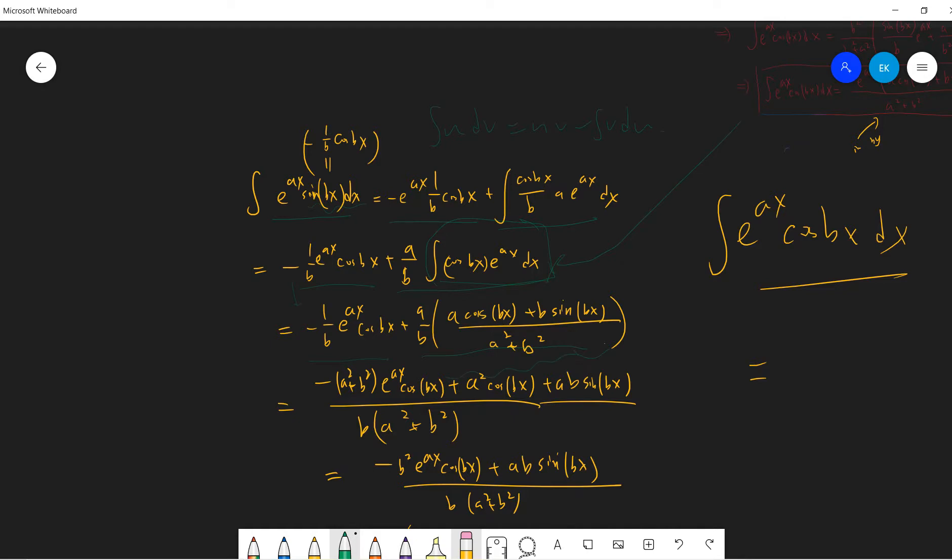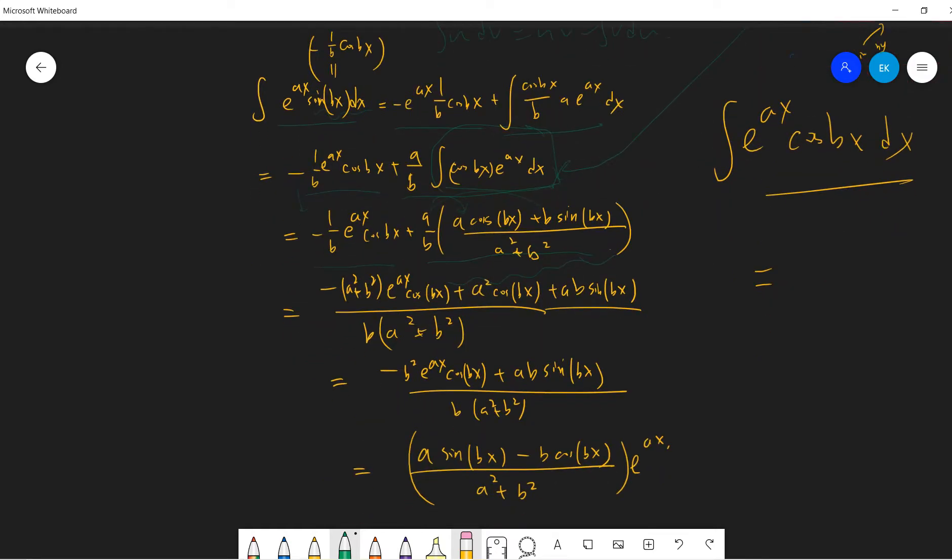And just take a denominator, so you get the a minus b squared plus b squared plus bx plus a squared, right? You pull a squared plus ab sine bx. So the a squared cancel, then you get negative b squared exponential ax cosine bx plus ab sine bx divided by b. So cancel b, delete b. So you get a sine bx minus b cosine bx exponential ax. Okay, so nice way, this is our answer.